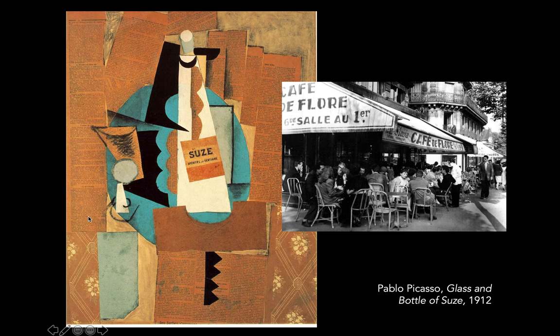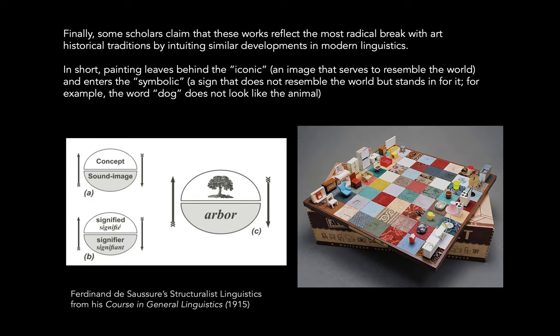And so the way these papiers collés are interpreted along these lines is to say that actually, Picasso is referencing this milieu — this social life of what the cafés were like, of working-class, poor people coming there to read the news. You almost become that person by looking at these papiers collés, because you're at the café table and you can look up close and read the news. So that's an interpretation that's kind of interesting and fun.